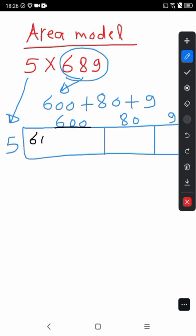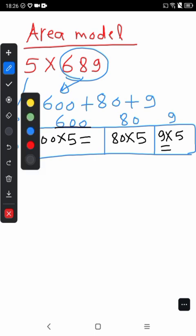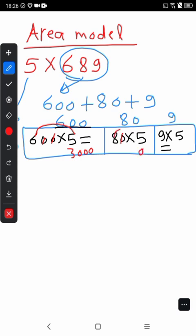Multiply 600 times 5. Next, multiply 80 times 5. Next, multiply 9 times 5. I cancel 2 zeros and write 2 zeros, 6 times 5 is 30 but we have 3000. Next, cancel the zero, write zero, 8 times 5 is 40 so we have 400. 9 times 5 is 45.